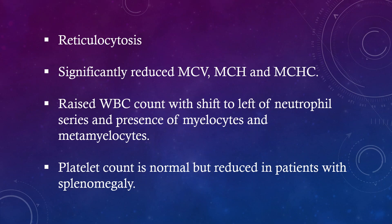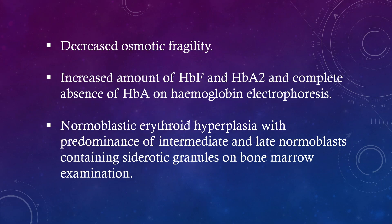Raised WBC count with shift to left of neutrophil series and presence of myelocytes and metamyelocytes. Platelet count is normal but reduced in patients with splenomegaly. Decreased osmotic fragility. Increased amount of HbF and HbA2 with complete absence of HbA on hemoglobin electrophoresis. Normoblastic erythroid hyperplasia with predominance of intermediate and late normoblasts containing siderotic granules on bone marrow examination.